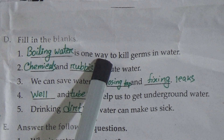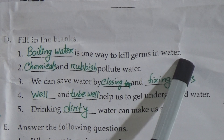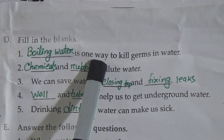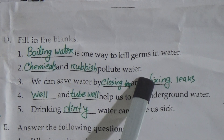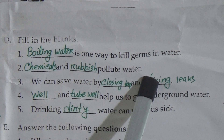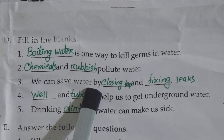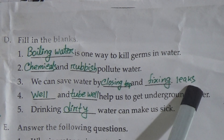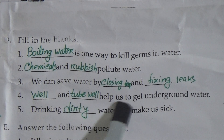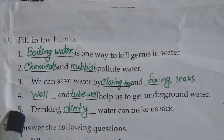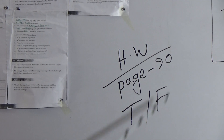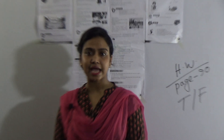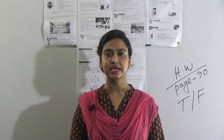Section D — Fill in the blanks. Number 1: boiling water is one way to kill germs in water. Number 2: chemicals and rubbish pollute water. Number 3: we can save water by closing taps and fixing leaks. Number 4: wells and tube wells help us to get underground water. Number 5: drinking dirty water can make us sick. I hope you have understood today's topic. See you again in the next class — Allah Hafiz.